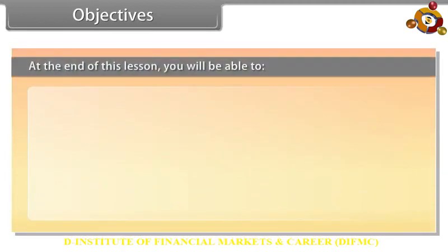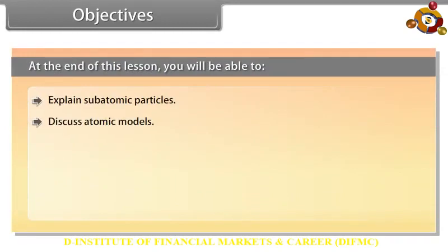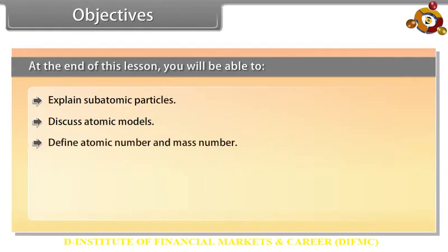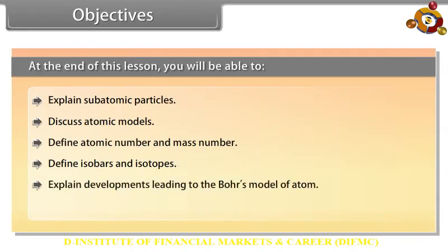At the end of this lesson, you will be able to: explain subatomic particles; discuss atomic models; define atomic number and mass number; define isobars and isotopes; explain developments leading to Bohr's model of atom; and explain Bohr's model of the hydrogen atom.